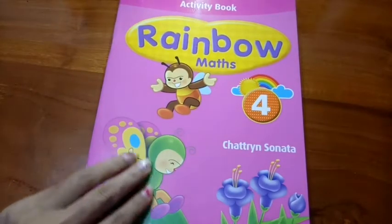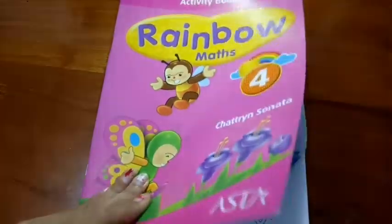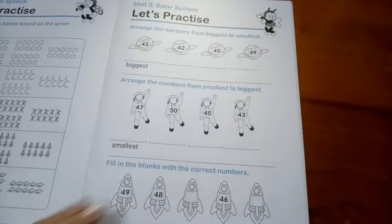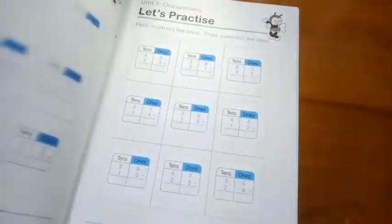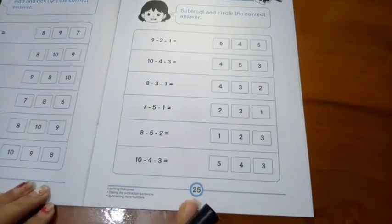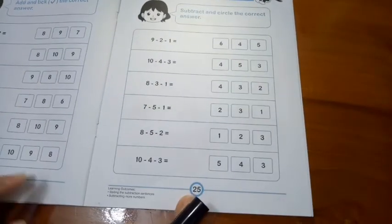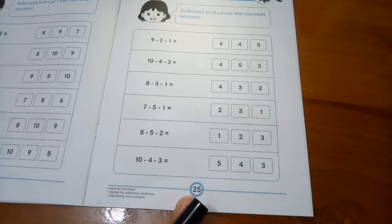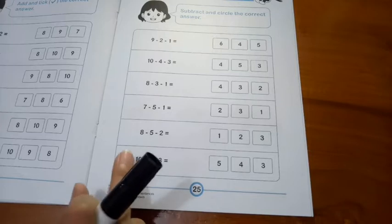After you open your rainbow math book, page 25, we want to count the subtraction with more numbers.